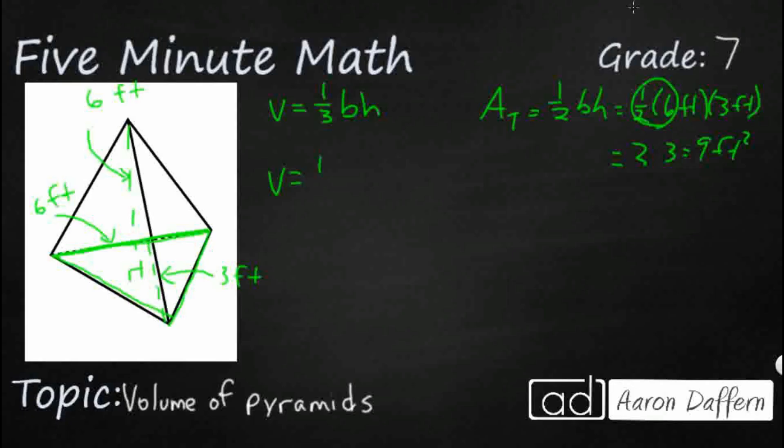So we've got volume equals one-third. Our base is 9 square feet. Then we have a height right here of 6 feet. And we kind of put all that together. That makes 3. So volume is going to make 18 cubic feet.